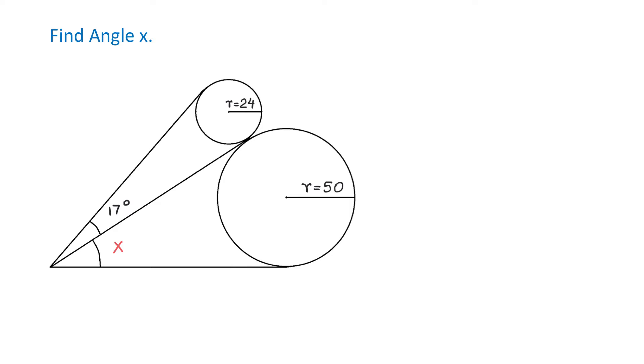In this figure we have two circles. The radius of the larger circle is 50 units and the radius of the smaller circle is 24 units. We also have an angle that measures 17 degrees, and this angle is formed by two tangents to the smaller circle.